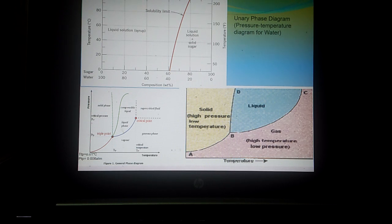Phase is a homogeneous portion of a system that has uniform physical and chemical properties. For example, water. If you put water in a glass, whether at the bottom, in the middle or top, that water has the same physical and chemical properties. So we can say it is a single phase.